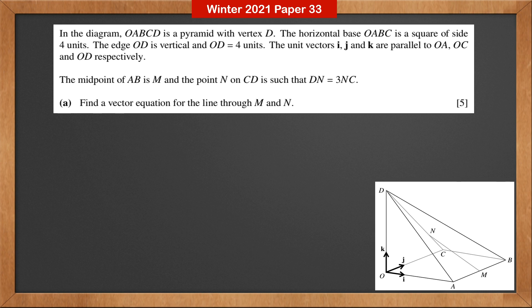We first need to find out OM and ON. OM, we know that it's OA plus AM. And OA is 4I. AM, since M is the midpoint of AB, so AM is 2J. Therefore, OM is 4I plus 2J.